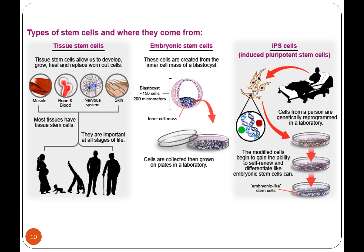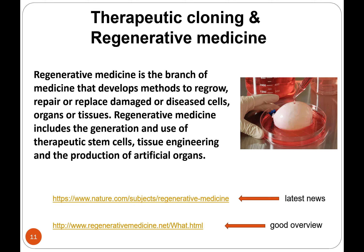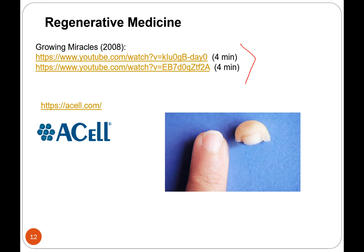We've already talked about stem cells. I'm bringing them back up because for therapeutic cloning, there's a blurred line between stem cells and regenerative medicine. For regenerative medicine — to make self-tissue — we need some of your stem cells. Regenerative medicine is the branch of medicine that develops methods to regrow, repair, or replace damaged or diseased cells, organs, or tissues. I highly recommend you watch the 'Growing Miracles' short news video — pretty interesting.